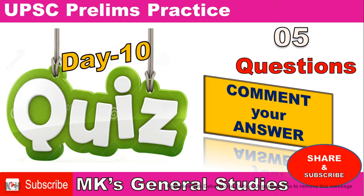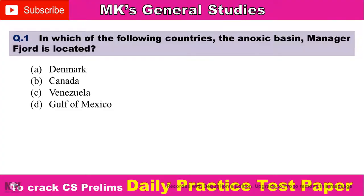Hello friends, I have brought again five random practice questions for you. You have to give the topic of the question and comment your answer. Let's start. First question: In which of the following countries is the anoxic basin Cariaco Basin located? Option A: Denmark, Option B: Canada, Option C: Venezuela, Option D: Gulf of Mexico. Comment your answer.